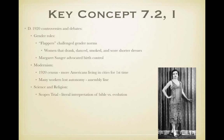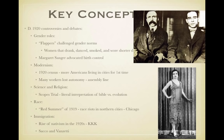There were conflicts between science and religion, exemplified by the Scopes Trial — literal interpretation of the Bible versus evolution. John Scopes was put on trial for teaching evolution in a public school. There were also race issues: in 1919, the Red Summer brought race riots to northern cities, most notably Chicago. Immigration was controversial too, with the rise of nativism, the resurgence of the KKK, and the Sacco and Vanzetti case — two Italian immigrants convicted of murder and sentenced to death.